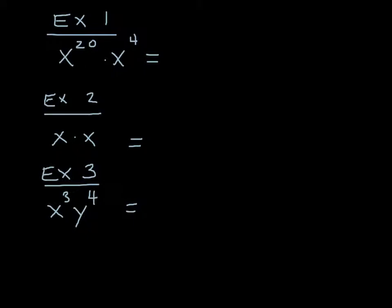x to the twentieth just looks like twenty x's. x to the fourth looks like four more x's and they're all in one unbroken string of multiplication. So what that would give me would be x to the twenty-fourth.